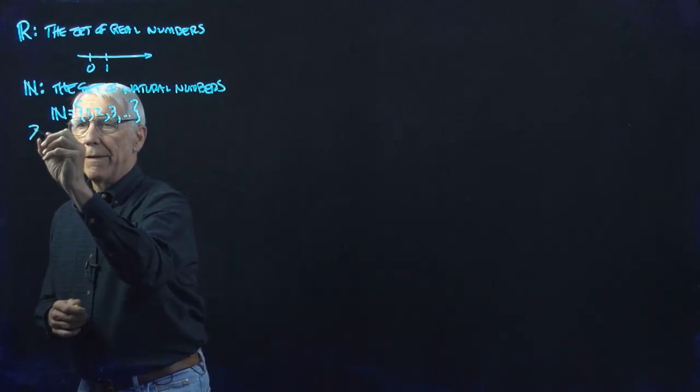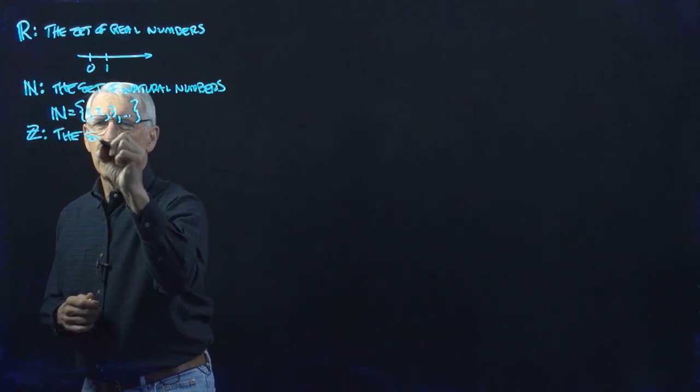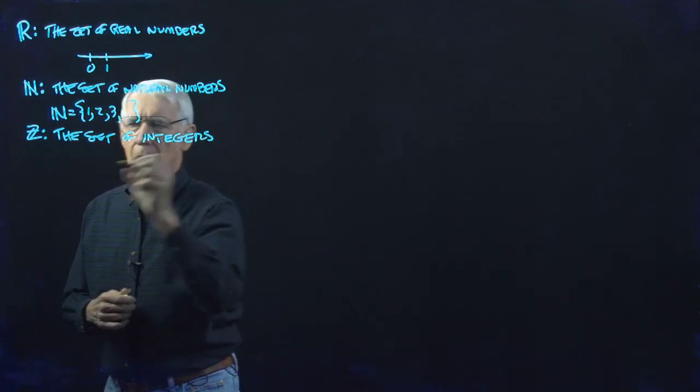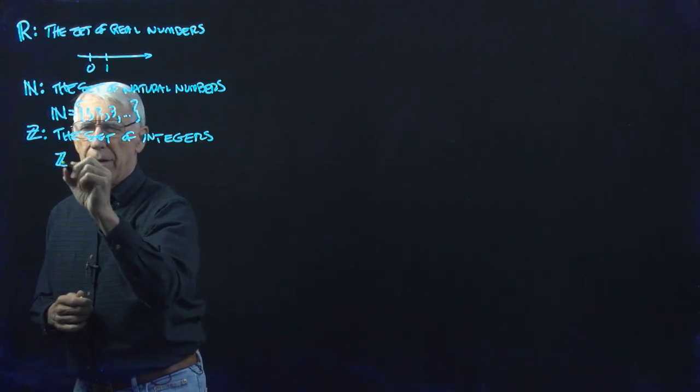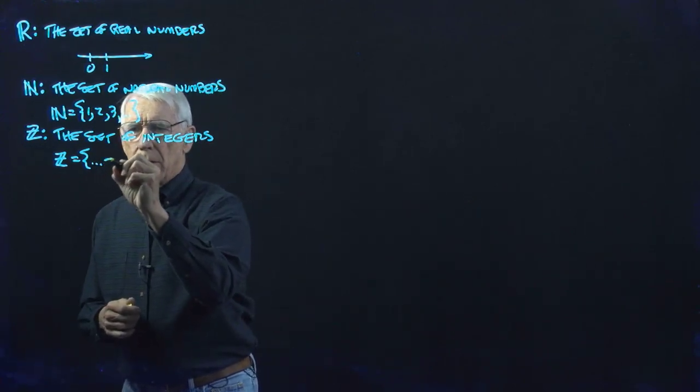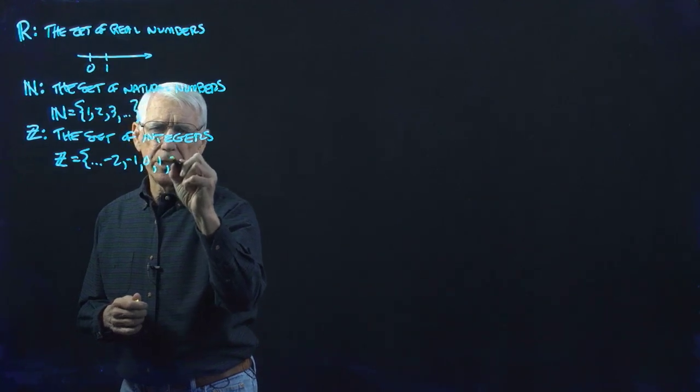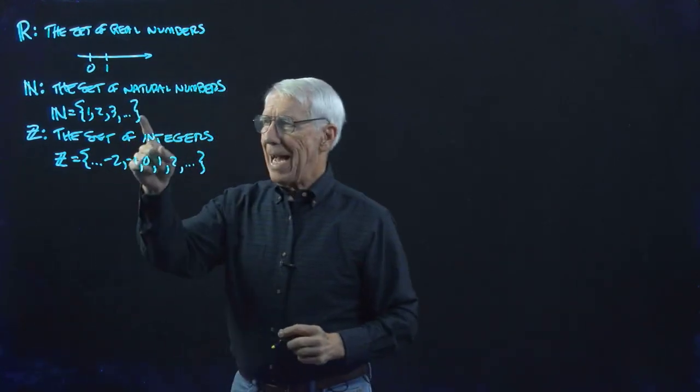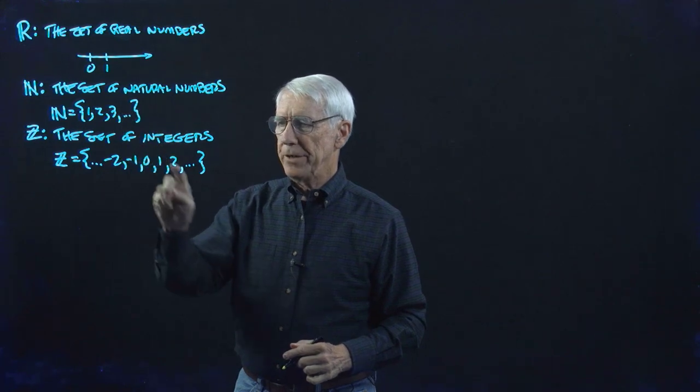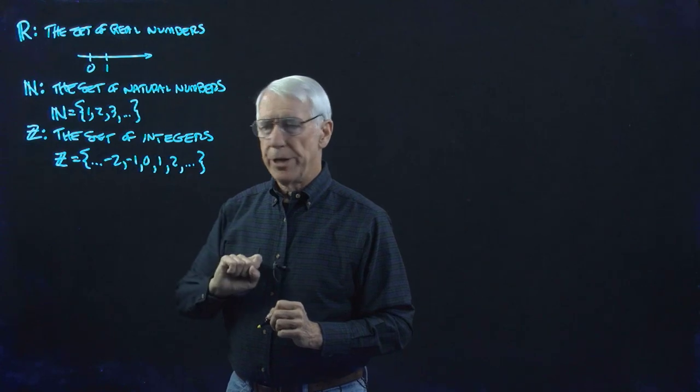We have the set of integers. That is the set of all the negative and positive integers, and of course zero. The ellipsis or dots here just indicate this goes on forever in the positive direction and also goes on forever in the negative direction.